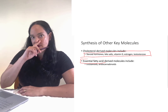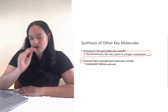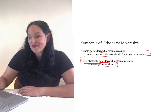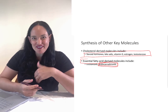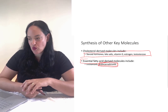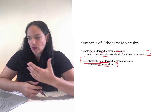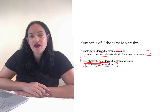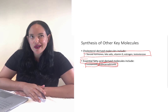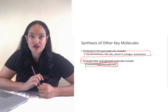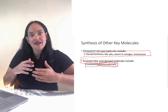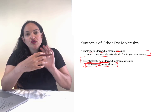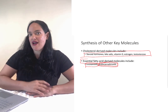Essential fatty acids — those with double bonds at position three or position six — can be used to form endocannabinoids. These are our natural cannabinoids that have a number of physiological roles, including effects on appetite and reward. Essential fatty acids can also be used to form eicosanoids, which are signaling molecules — hormone-like molecules — with important physiological roles, such as regulating the diameter of blood vessels. So in addition to specific lipid roles, we can also synthesize other important molecules from lipids.